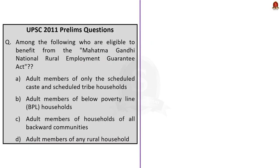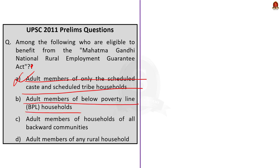The next question is about MG NREGA — you have to find who is eligible to benefit from the act. Option A says adult members of only SC and ST households — incorrect. Option B says adult members of below poverty line households — incorrect. Option C says adult members of households of all backward communities — incorrect. Option D says adult members of any rural household — this is correct. Any adult member of any rural household can be an eligible person to get benefited under MG NREGA.